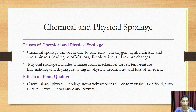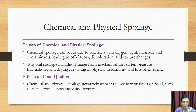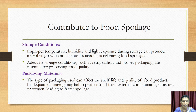In chemical spoilage, food items can react with oxygen, light, moisture, and contaminants, leading to off-flavors, discoloration, and texture changes. In physical spoilage, mechanical forces, temperature fluctuations, and drying can cause loss of food texture. Both chemical and physical spoilages negatively impact the sensory qualities of food, such as taste, aroma, appearance, and texture.